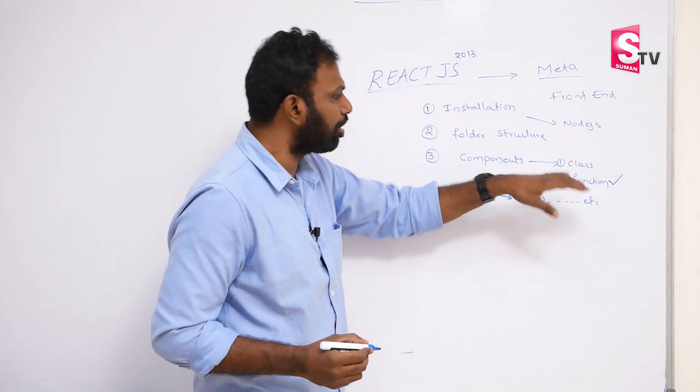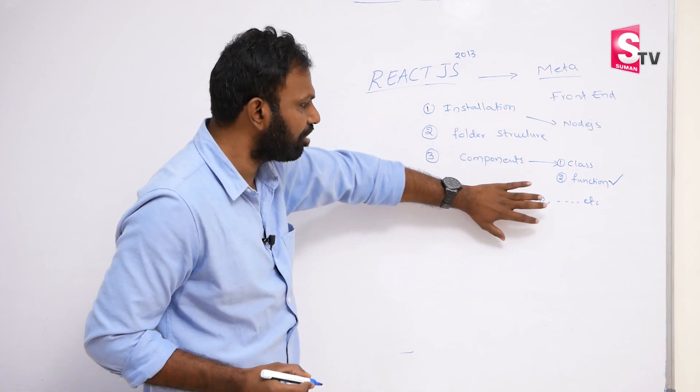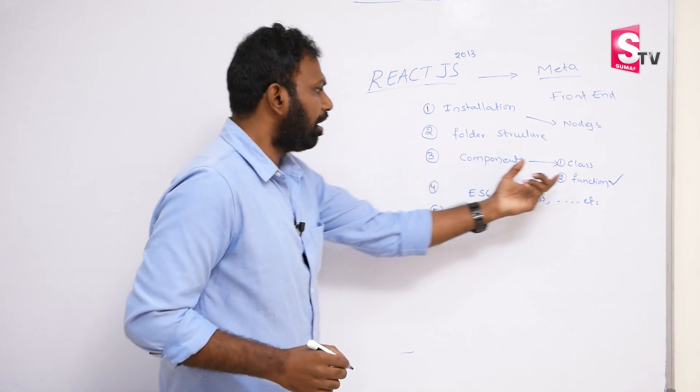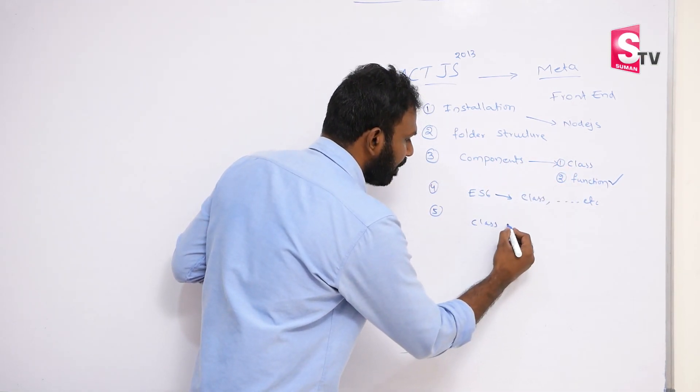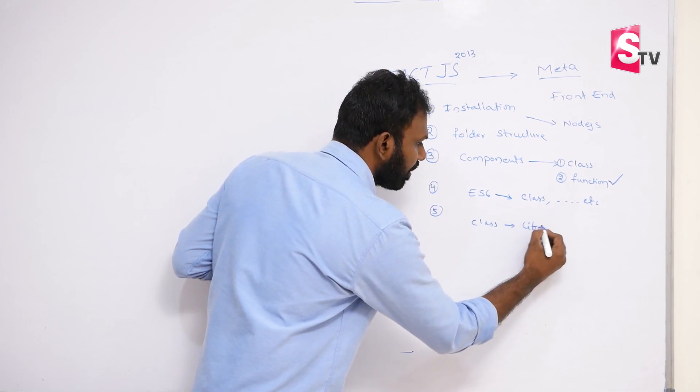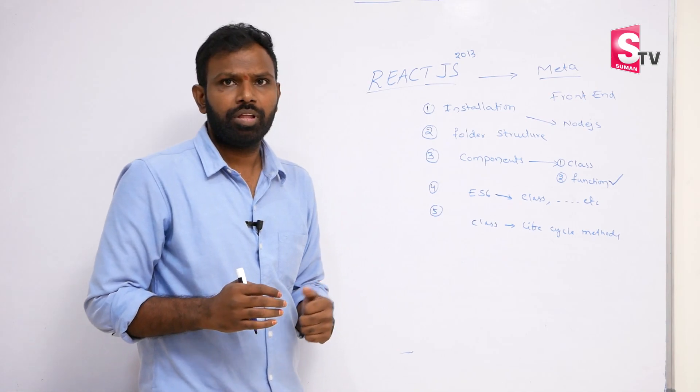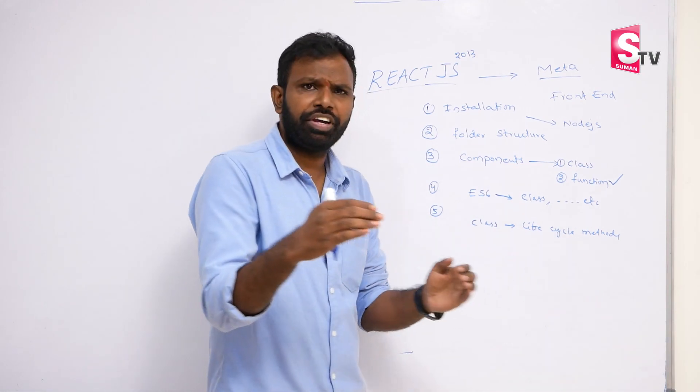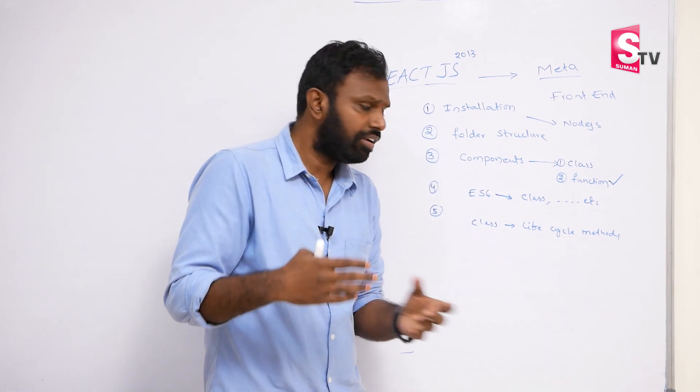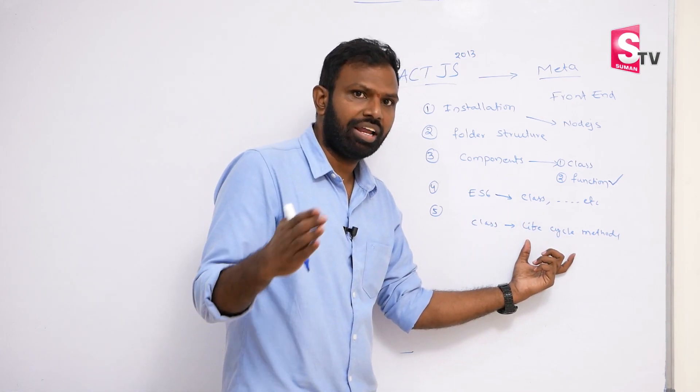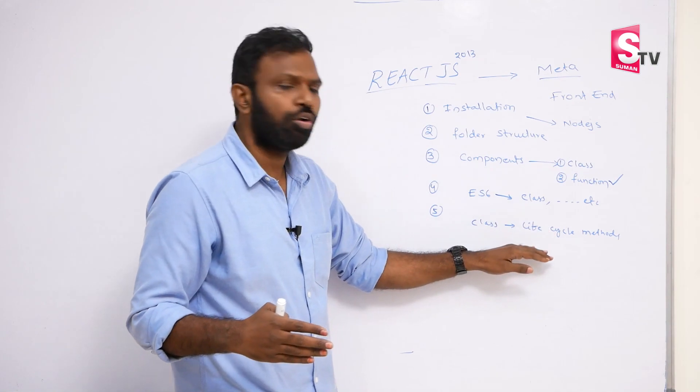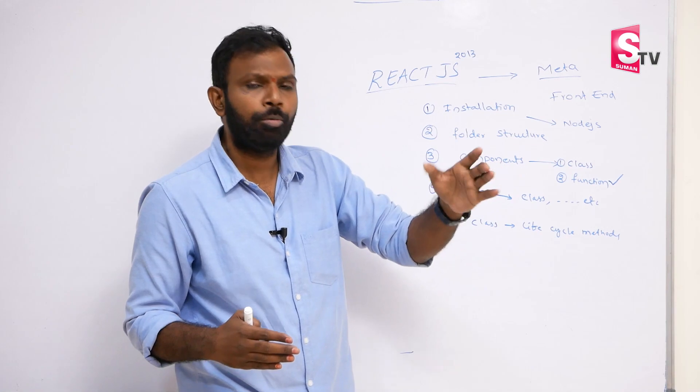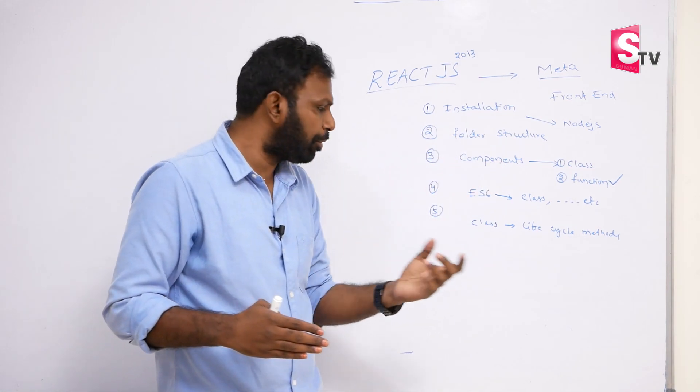If you are going with class-based components, then we have life cycle methods. In human life, for example, you have different stages right? Like childhood, school, college - life cycle stages. When you create a component, that component has a life cycle. The component displays in the browser which is mounting, then updating, and when the component leaves that's unmounting. In every phase we have different types of life cycle methods.